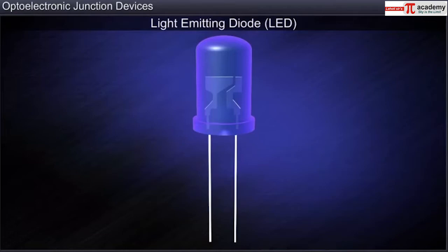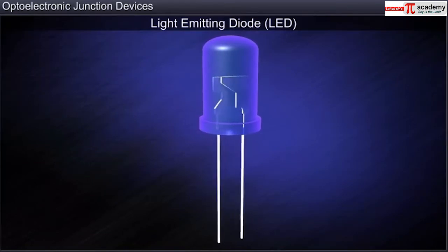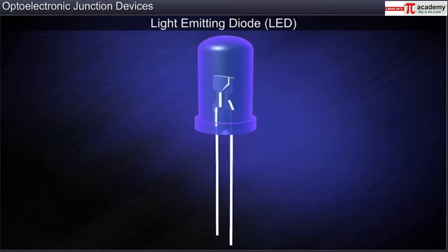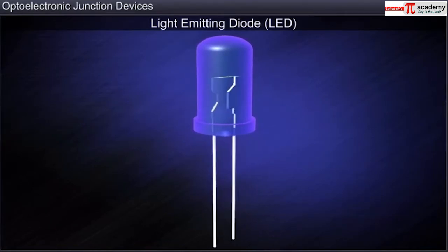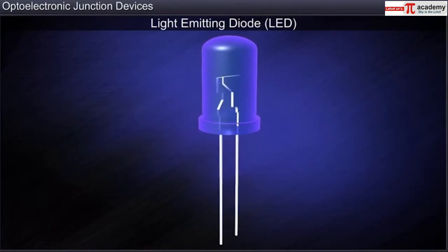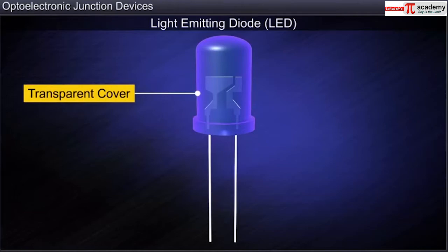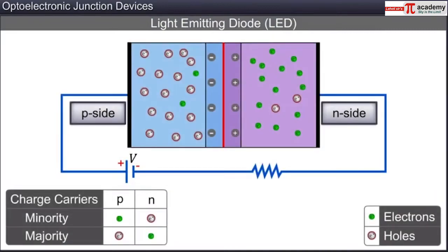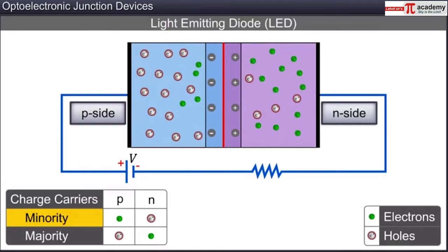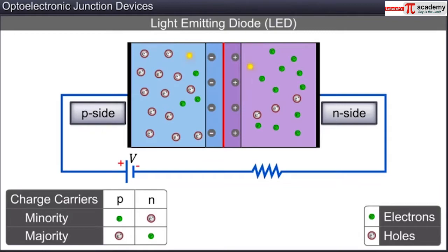A light emitting diode, or LED, is a device that produces photons of different frequencies of light. An LED is a specially fabricated, heavily doped PN junction diode cast in a transparent cover which allows the emitted light to shine through. An LED is operated under forward bias which increases the diffusion of minority charge carriers across the PN junction. This leads to the recombination of the electron-hole pairs which results in the liberation of energy in the form of photons.